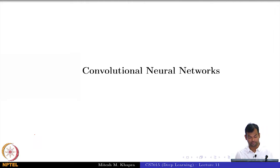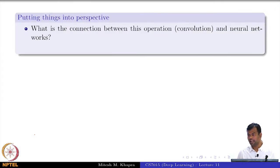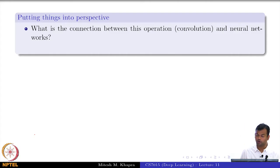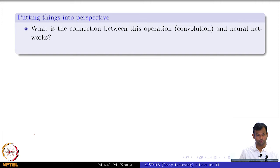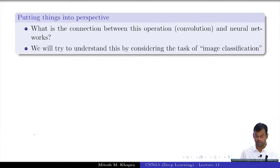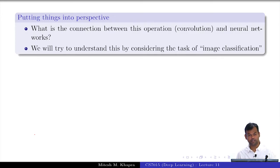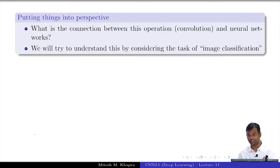Now we move to the next module on convolutional neural networks. So far we have just talked about a convolution operation — taking some input and converting it to output. What does any of this have to do with neural networks? This is a course on neural networks, so everything has to link to that. We will try to understand this by taking the example of image classification, and the next few slides will tell you the difference between machine learning and deep learning.